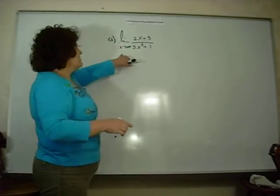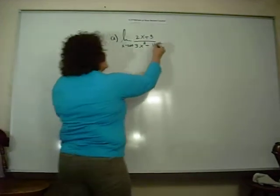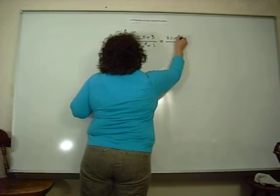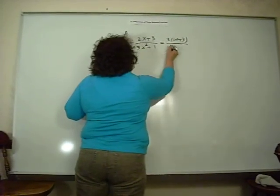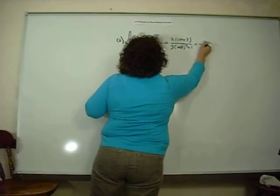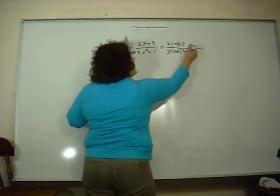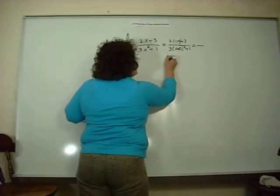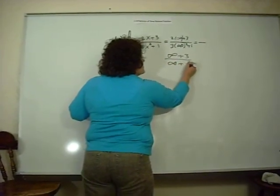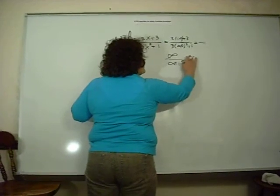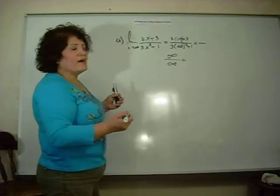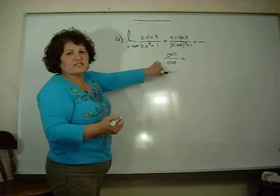The first thing we do with a limit is plug in the value. So we get two times infinity plus three over three times infinity squared plus one, which gives us infinity over infinity — that's undefined. So we have to do something about it; that cannot be the answer.